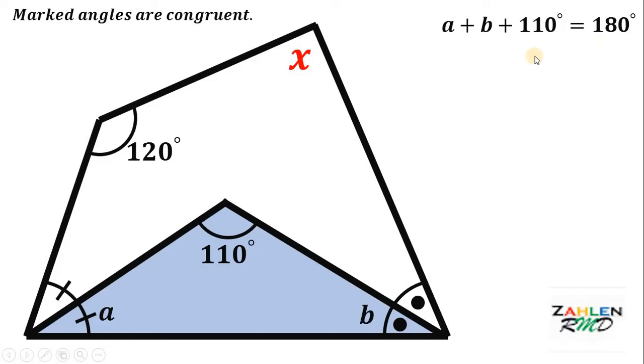Now, subtract 110 from both sides and we get that a plus b must be equal to 70 degrees. Now, keep in mind that a plus b must be 70 degrees.